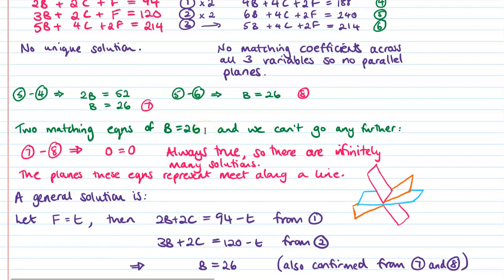But then we can't go any further because if you try to do equation number 7 minus equation number 8, which would be your natural next step of trying to work out what C or F might be, you get 0 equals 0. This is something that is always true, which means there are many solutions.